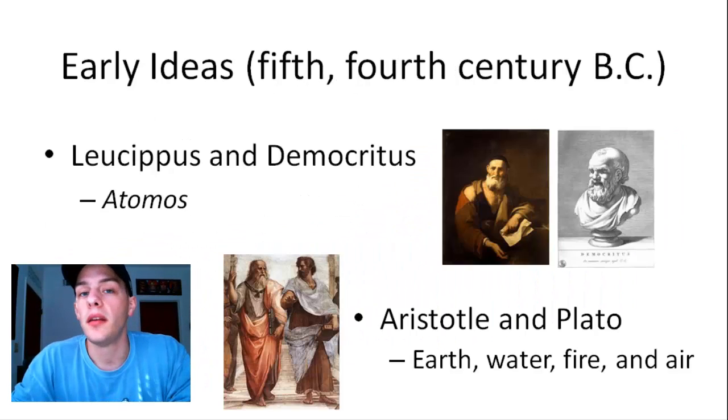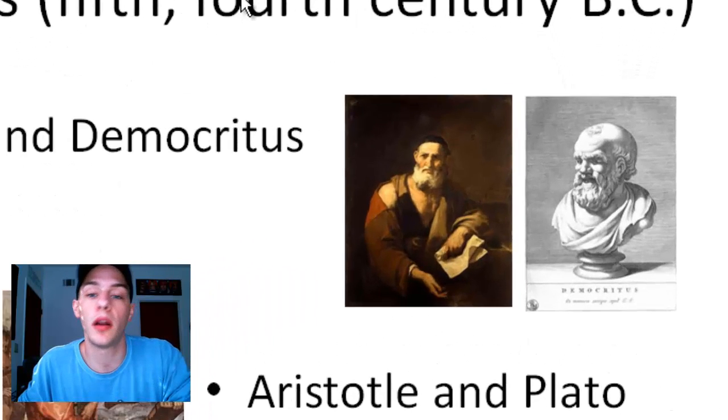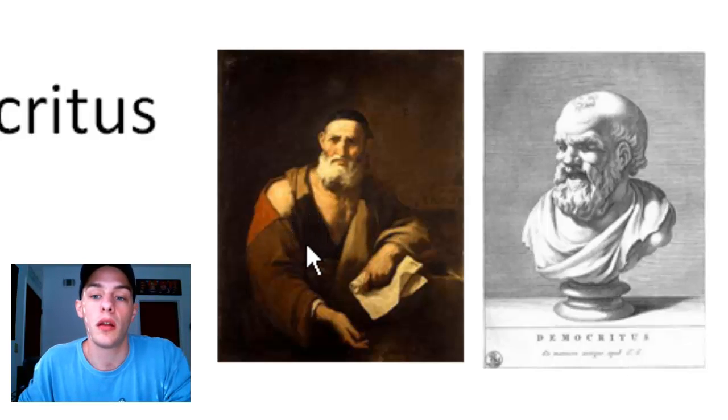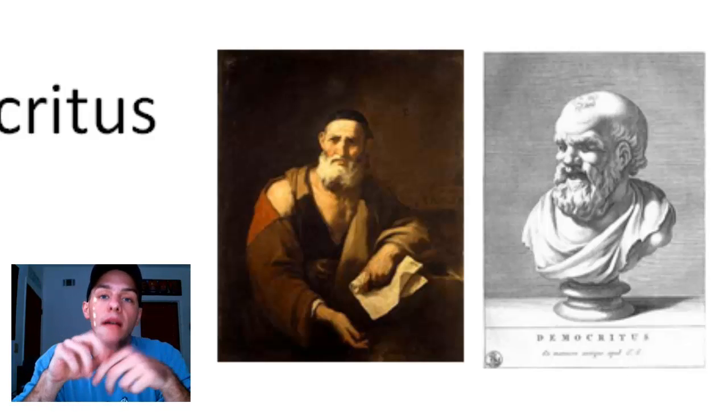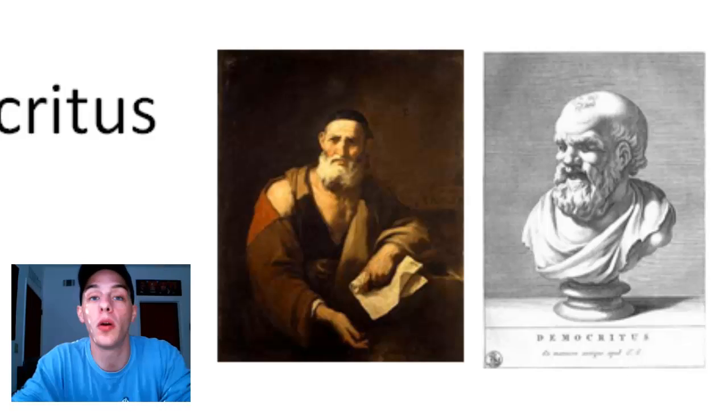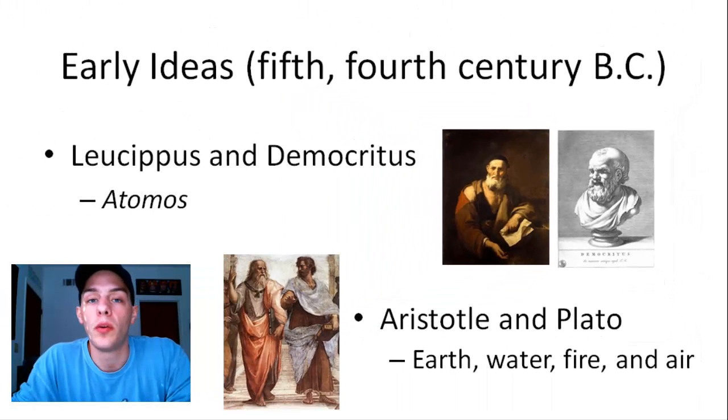Some of the earliest ideas about the existence of atoms were floating around as early as the 5th and 4th century BC, which is a pretty long time ago. These gentlemen here on the right side of your screen, this is Leucippus, and on the right here is his student Democritus. These two guys were the first to really propose the existence of atoms. According to these guys if you took a piece of paper and you ripped it up in half, and you kept ripping it in half over and over again, eventually you would get to a very small but indestructible particle which they called atomos, which literally means uncuttable and is the Greek word from which the word atom is derived.